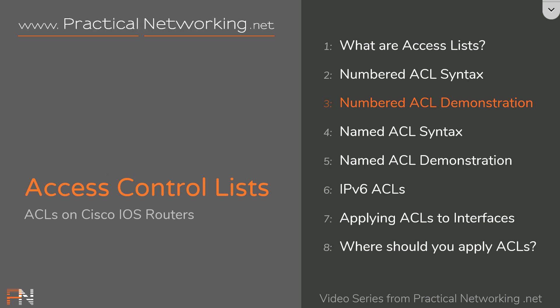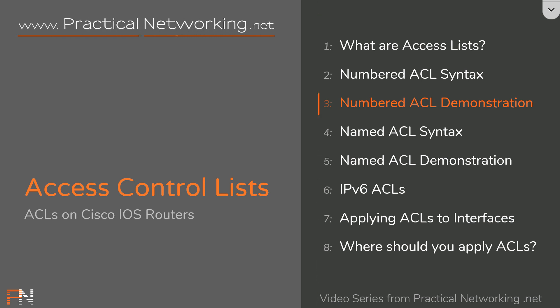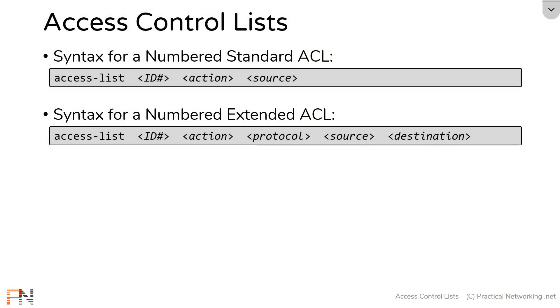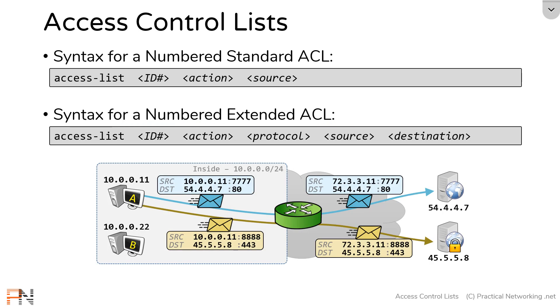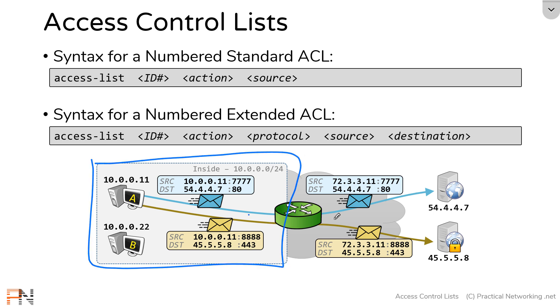Hello, this is Ed from practicalnetworking.net. Welcome to another video in the series on access control lists on Cisco routers. This is video 3, where we'll be doing a demonstration of the configuration of numbered access lists. In the last video, we stepped through each of the fields in a numbered standard and a numbered extended access list. In this video, we'll be configuring access lists together to match some packets in this topology. We're going to configure an extended access list as if it's being applied right here on that router, which means we'll be able to match traffic coming in from the inside out to the internet.